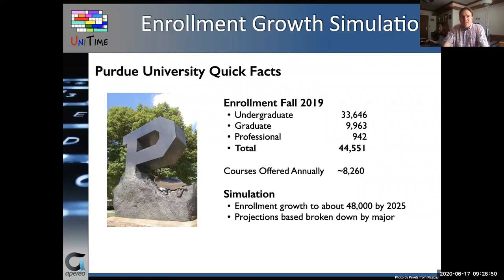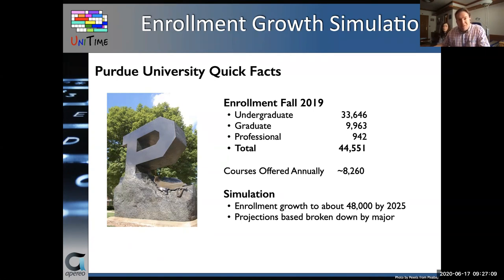Hello, my name is Tomasz. I will be talking about the simulation — more precisely a series of simulations — that we did at Purdue University last December. At our West Lafayette campus, we have almost 44,500 students, almost 34,000 of them undergraduate, and we offer a little over 8,000 courses annually. In these simulations, we considered projected growth in enrollments of close to 5,000 students within the next six years. These projected increases vary significantly based on college and major.